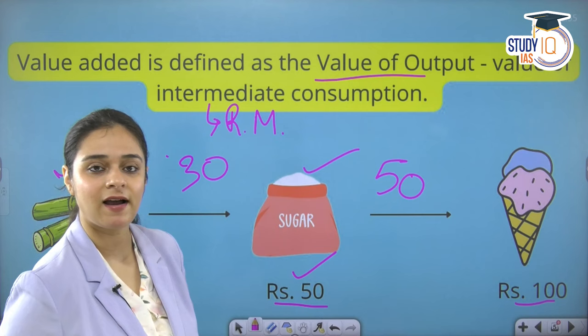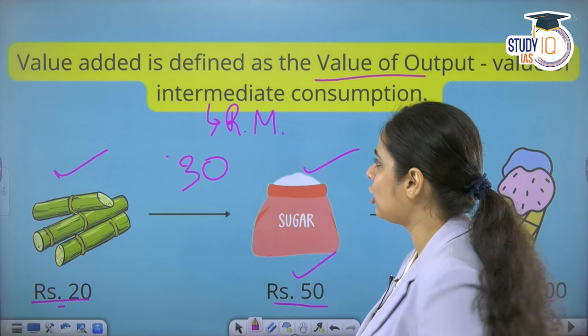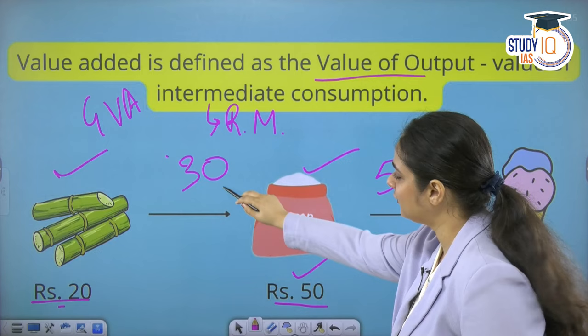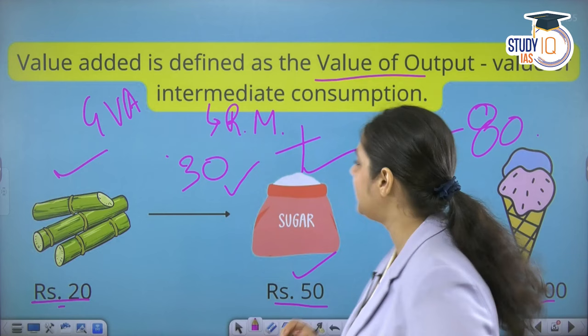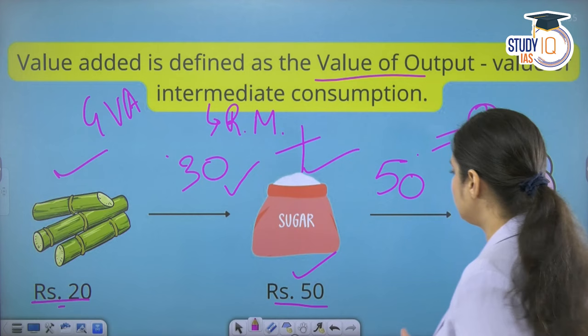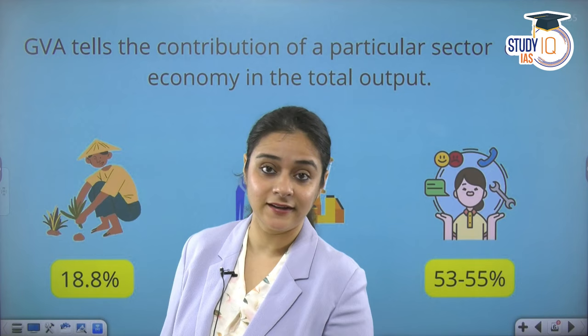So when we add up all the value added across the stages of production, we get the Gross Value Added. In our example, 30 rupees plus 50 rupees gives us a total Gross Value Added of 80 rupees in this economy for the year. This is how much value was added during the process of production.